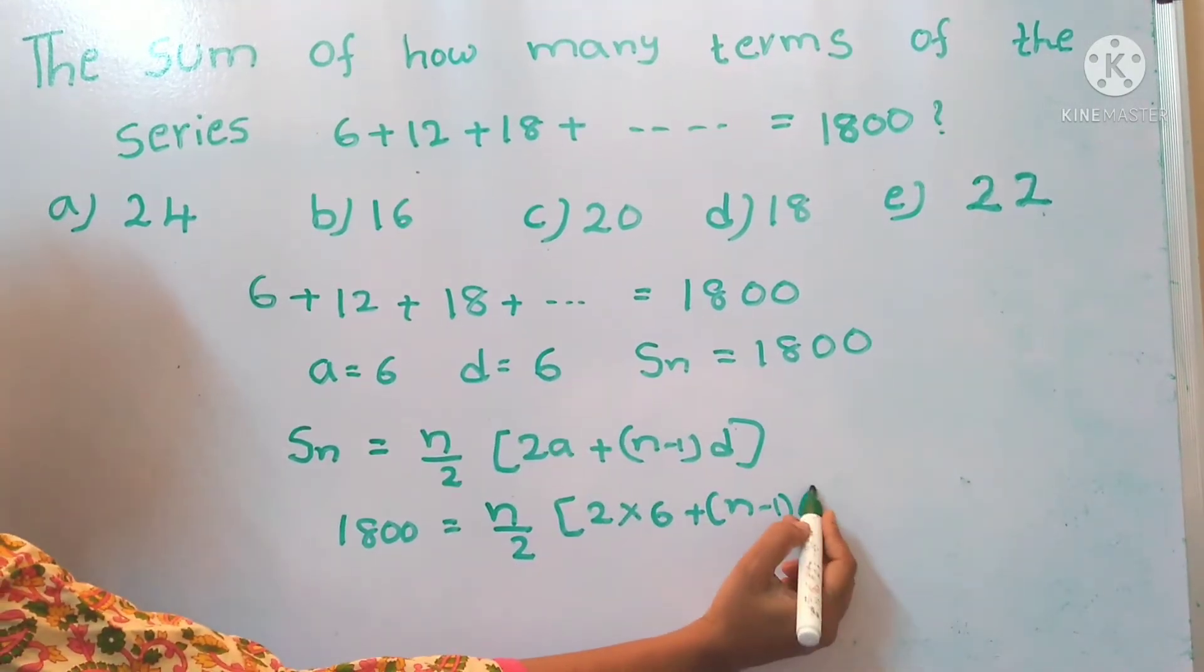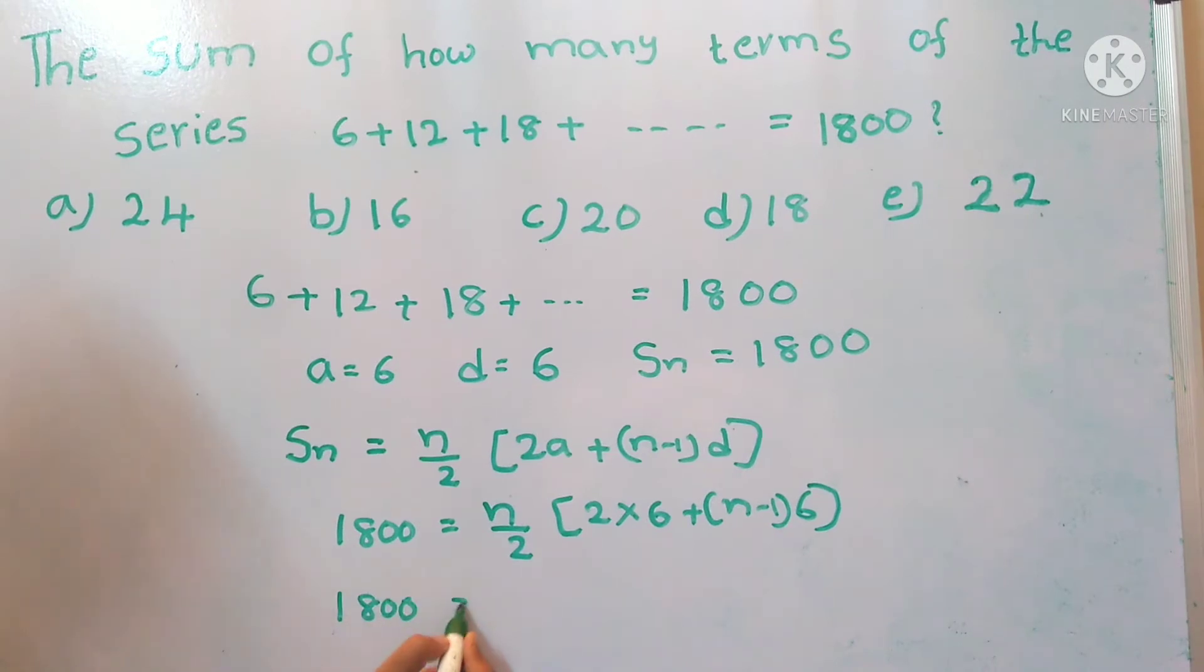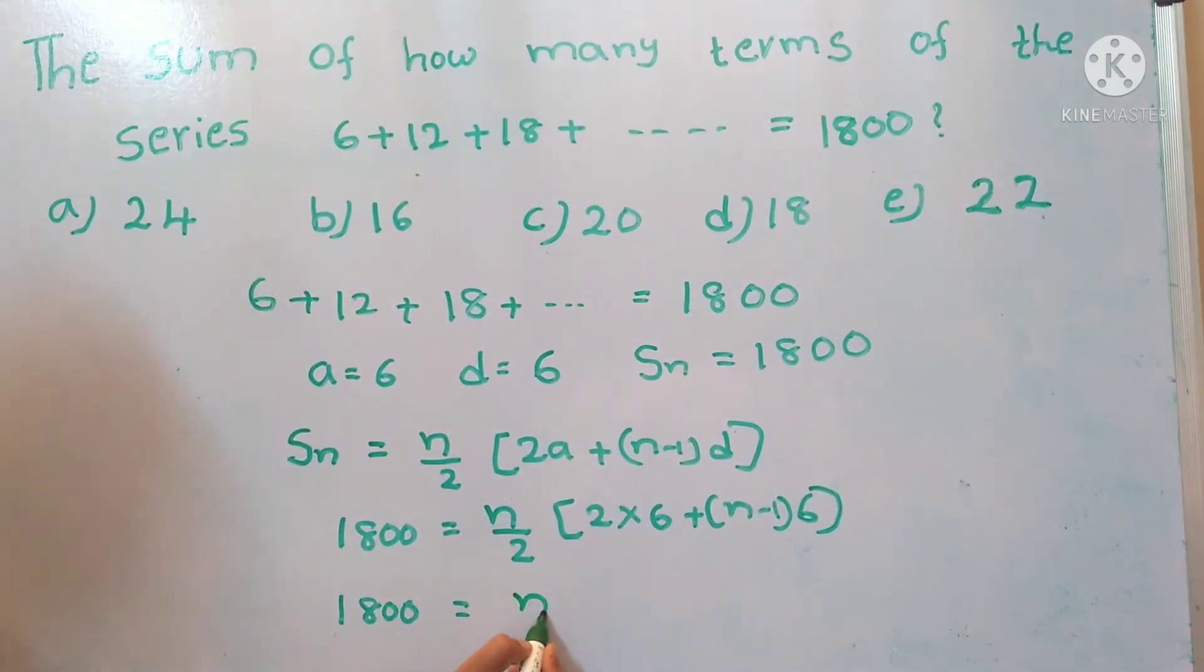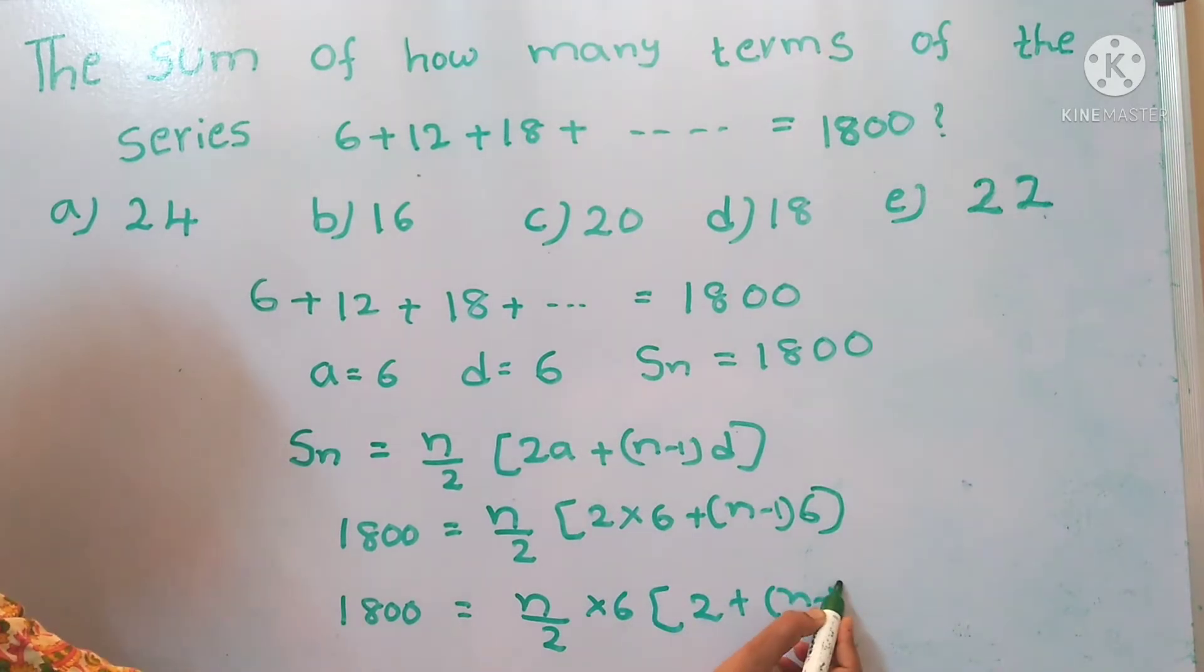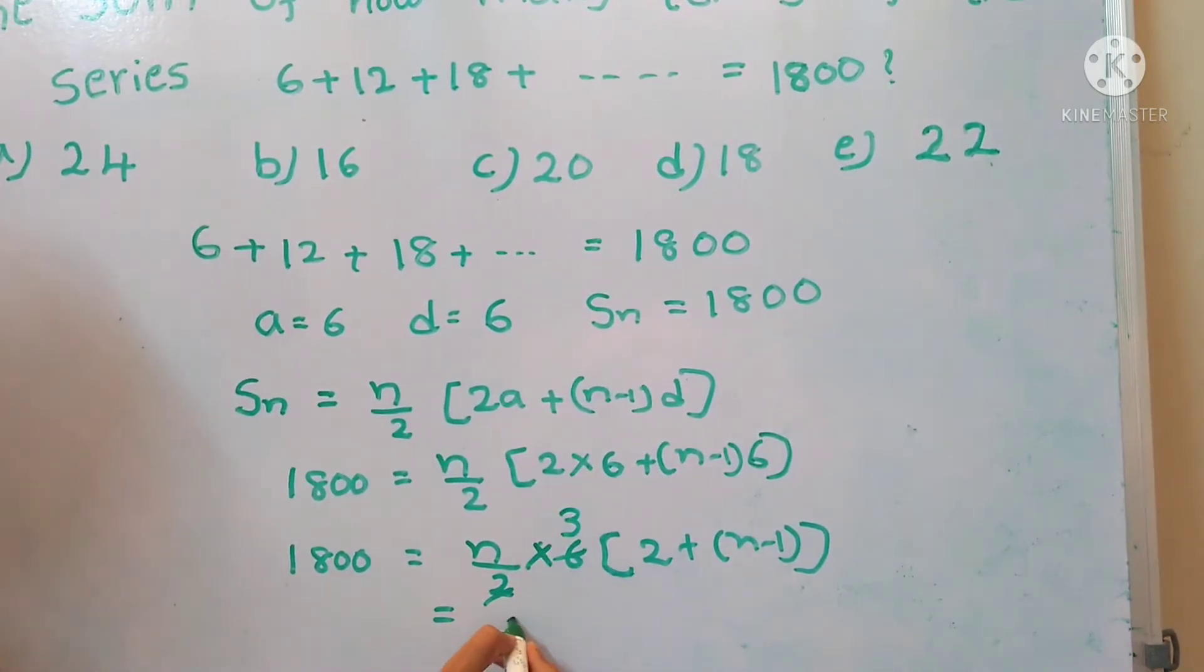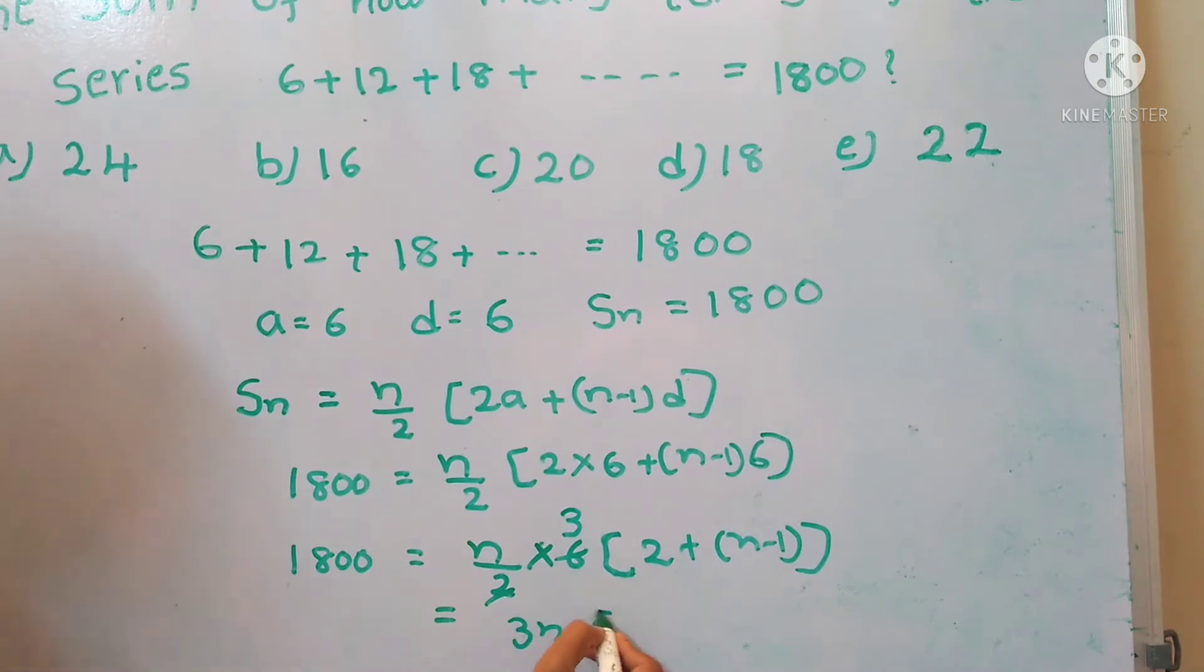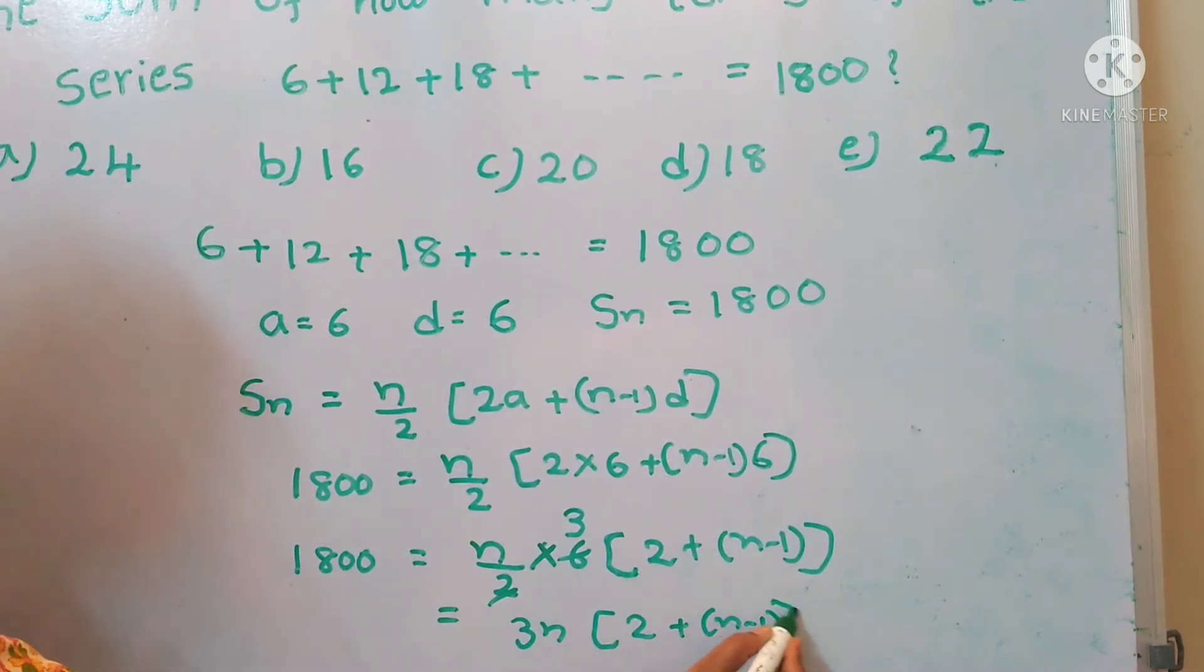Now in the above equation we have 6 as the common factor. So n/2 into 6 into (2 + n - 1). Now 2 times 3 is 6, so 3n into (2 + n - 1).